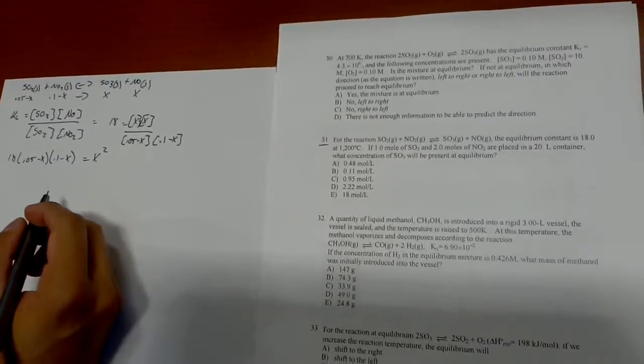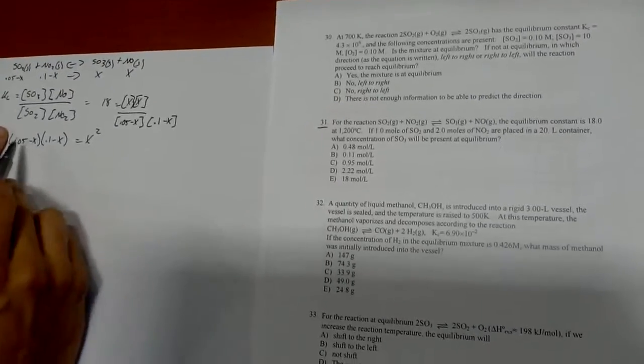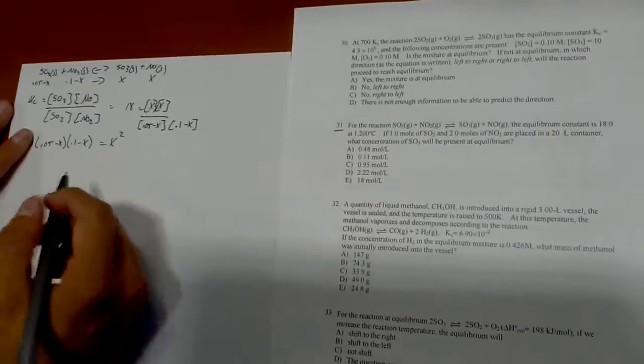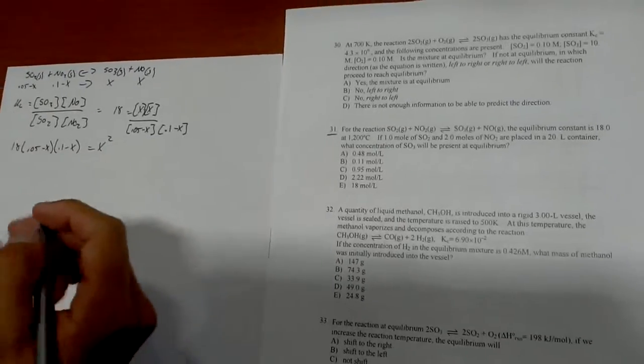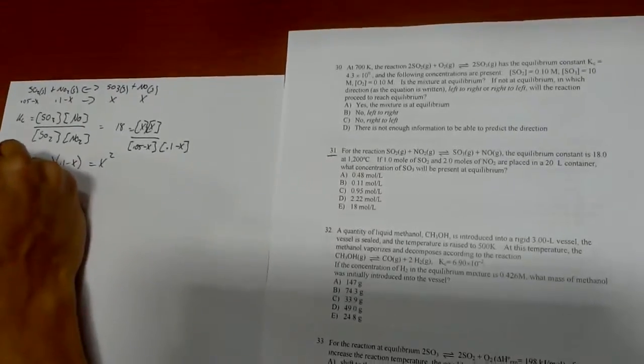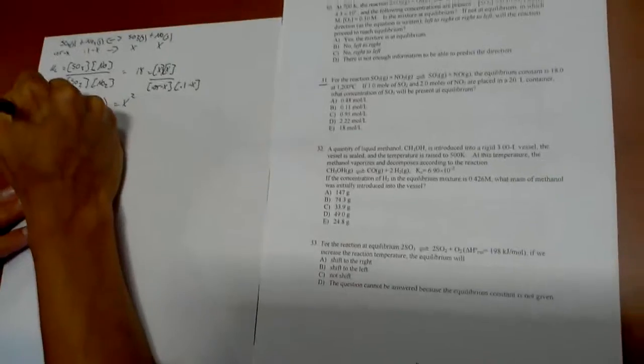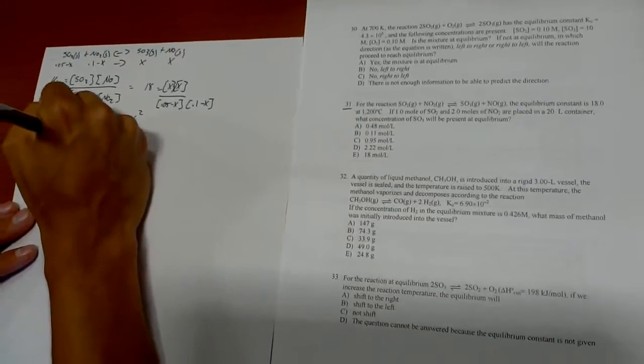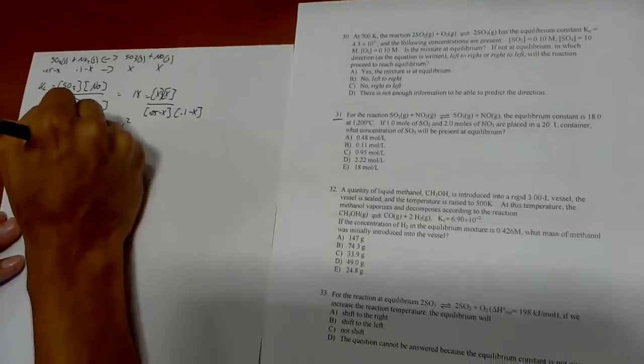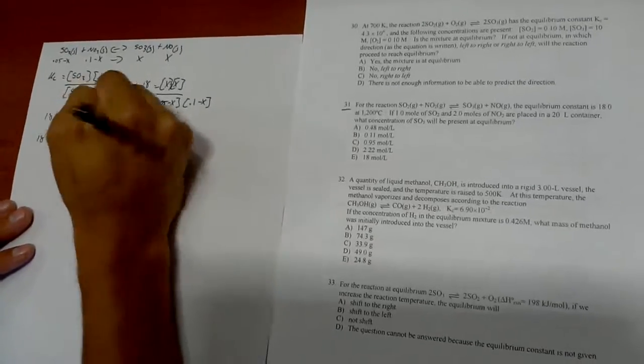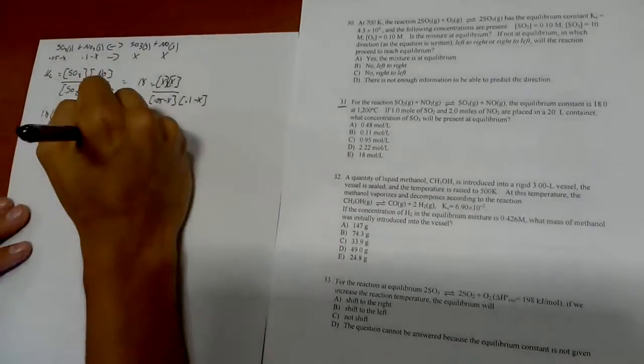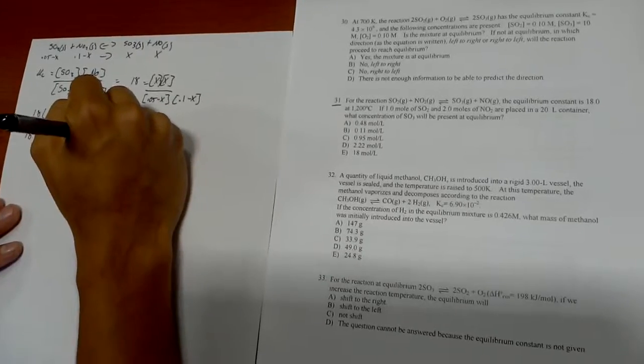Now if you look at the formula you'll notice that it looks a lot like if you're solving for a quadratic equation. So here we're just going to go ahead and FOIL these numbers, which is first outer inner last. So then we'll have 18 equals 0.005 minus 0.15x plus x squared equals x squared.